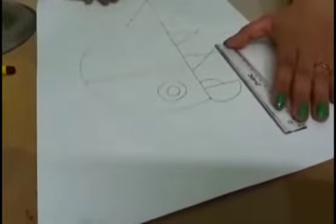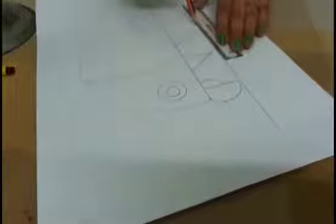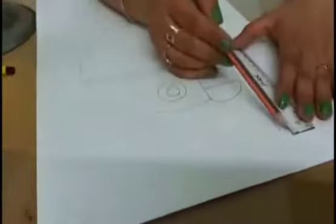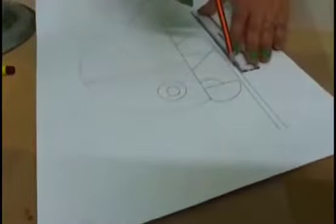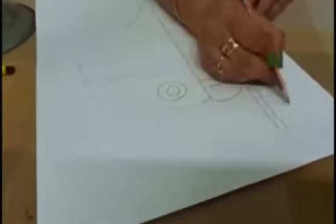For making branch, you can make one straight line like this and another straight line like this with the help of scale. Then make random leaves.